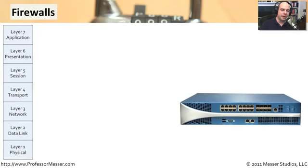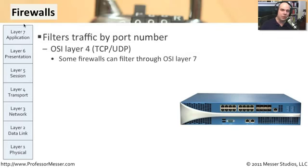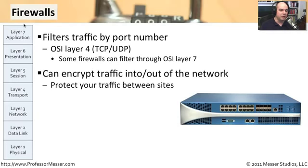Firewalls really cover the security perspective for the rest of the OSI stack. We've talked about switching at layer two and routing at layer three. At layer four and all the way up to layer seven, we have firewalls. Firewalls are really our first and last line of defense when traffic is going in and out of our network. If we need to protect servers, protect our users, or separate ourselves from the internet, it's a firewall that's going to be doing that. Firewalls can also be devices that encrypt data into and out of the network.